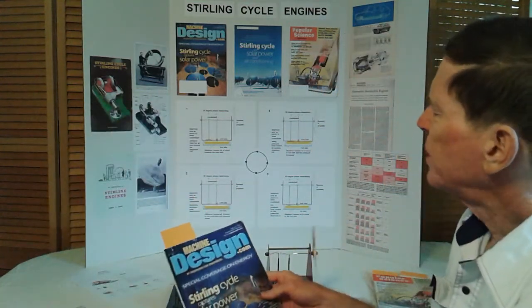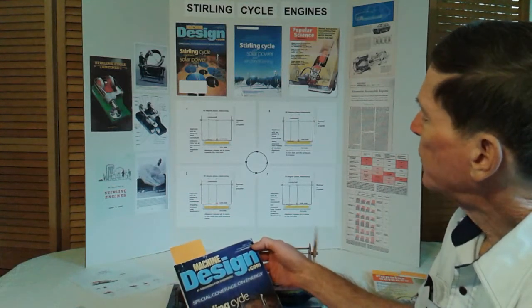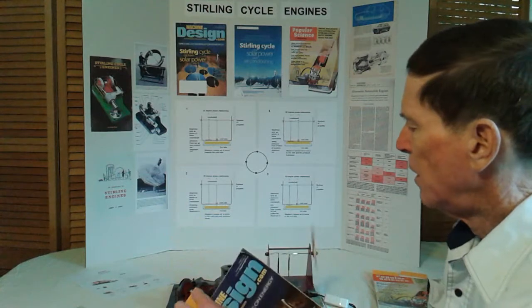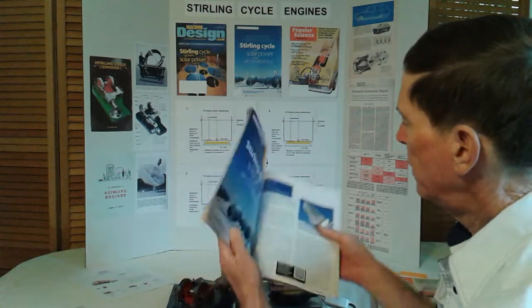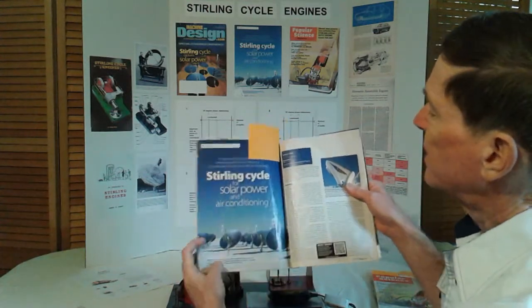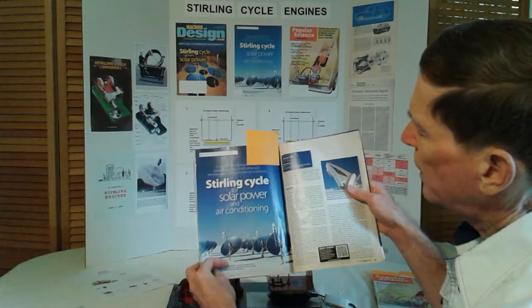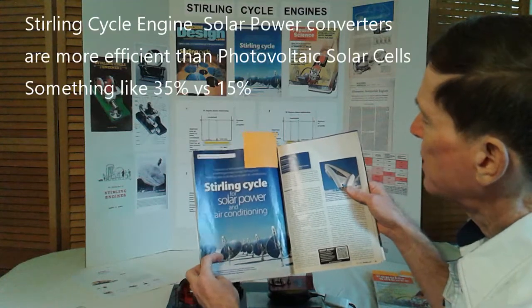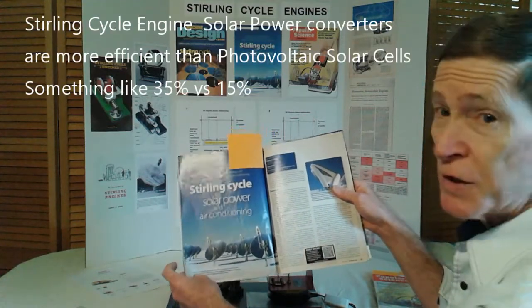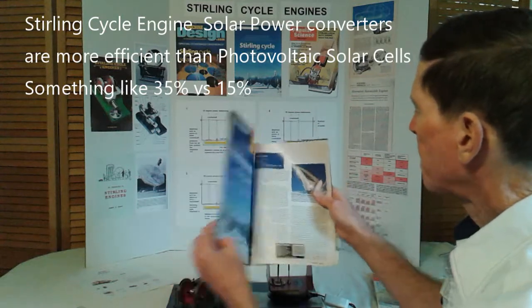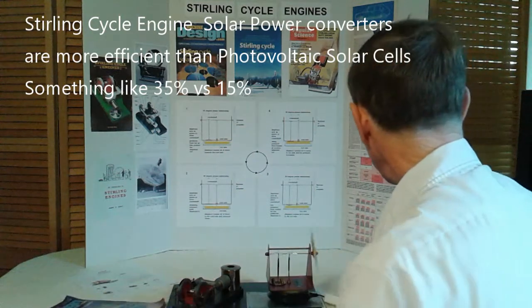This is a Machine Design from 2011: Stirling Cycle Captures Solar Power. You can see it's got the Stirling cycle engine up here. There's a parabolic reflector and also cooling lines. It's mounted on a heliostat so it tracks the sun. It's a fairly efficient way of converting solar power to electricity, about 30 some percent efficiency.